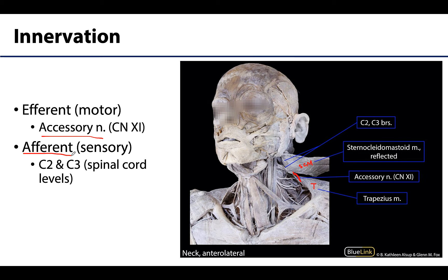A fancier and more accurate term for this is proprioception. Proprioception conveys information to the central nervous system regarding positioning of a joint or the degree of tension in a tendon. To demonstrate: put your hands behind your back and wiggle your fingers. Do you know that this is happening? Do you know your muscles are contracting and your joints are moving? This is proprioception. So if the accessory nerve is entirely efferent, where does the SCM get its afferent innervation? It's from C2 and C3 — the second and third cervical spinal nerves — fibers of which enter into the deep portions of the sternocleidomastoid.